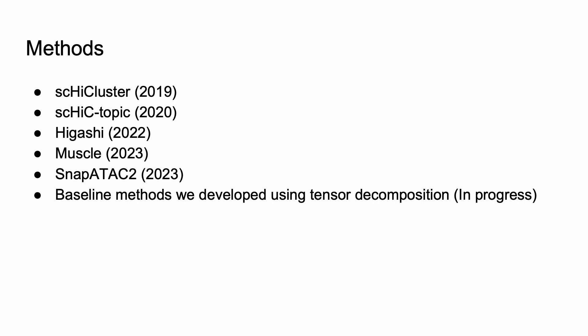So what methods are we benchmarking? The first one is the single cell SC Hi-C cluster. The second one is SC Hi-C topic, Hi-Gashi, which is a state-of-the-art method, and MUSCLE and Snap-ATAC. Additionally, our baseline methods, which we developed using tensor decomposition.